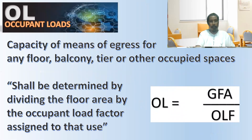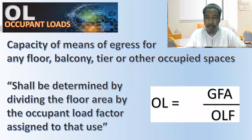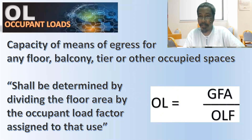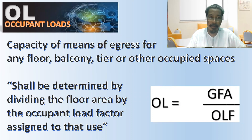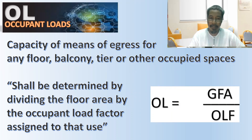What do we mean by occupant load? It is the capacity of means of egress for any floor, balcony, tier, or other occupied space. The occupant load shall be determined by dividing the floor area by the occupant load factor assigned to that occupancy.